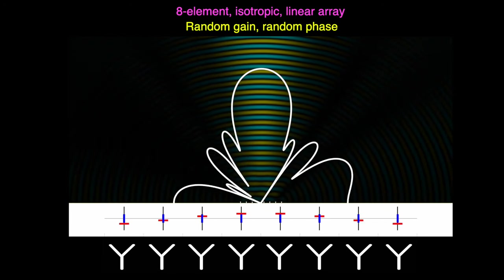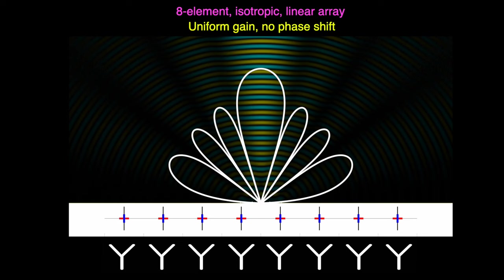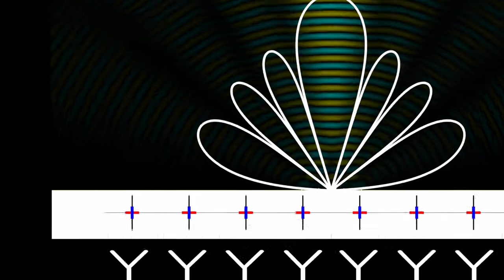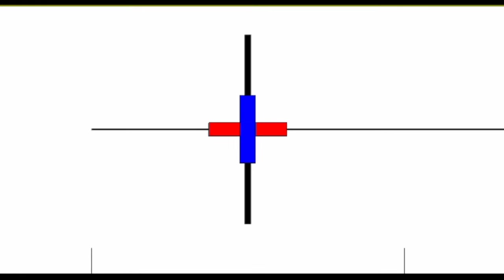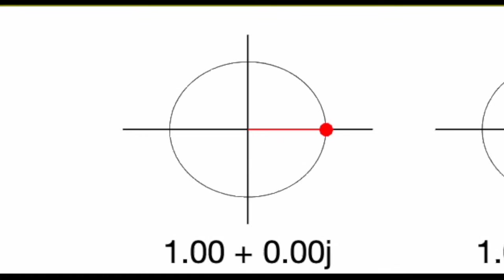Now, the way we define these gains and phases, at least mathematically, is with a weight vector. And to understand what this is, let's look at the gain and phase slider. Instead of a left-right up-down slider system like I've drawn here, let's say we represent gain and phase on a complex plane with a phasor. So here, a value of 1 plus 0j corresponds to a gain of 1, which is the length, and a phase of 0 degrees, which is the angle.